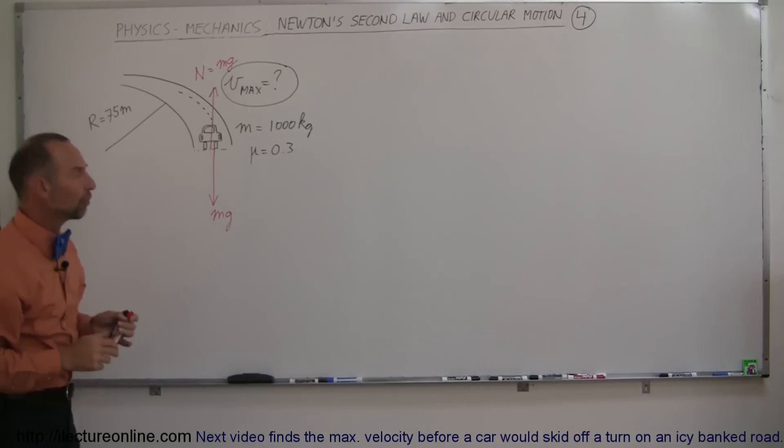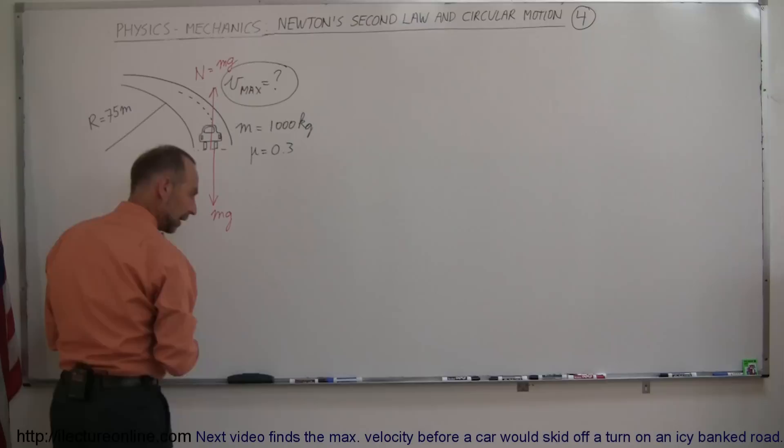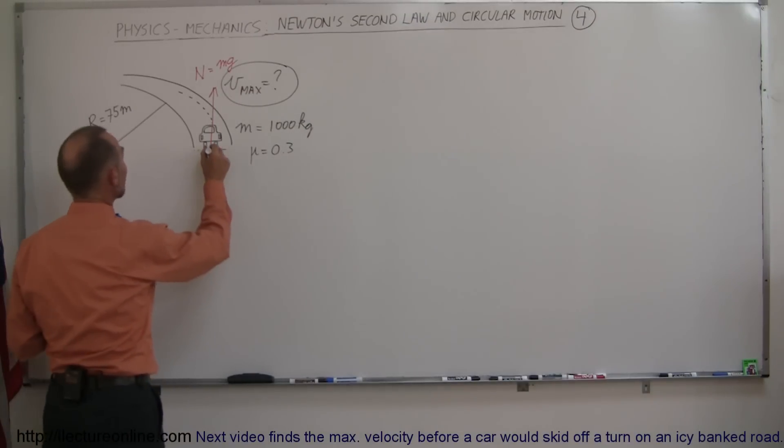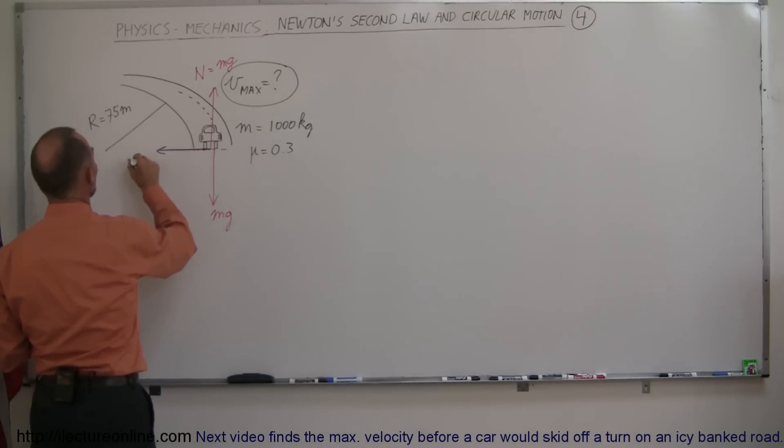And then there's the friction force. What keeps the car on the road would be the friction, and that would be providing the centripetal force. So think of the friction force to the left, force friction, which keeps the car on the road. That is equal to the normal force times mu, and the normal force is the weight, mg mu.